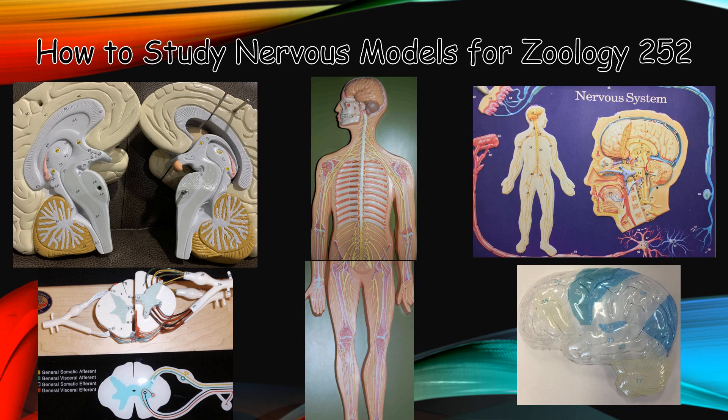The purpose of this video is to help you with the nervous models for the Zoology 252 class. Specifically, we will go over learning strategies on how you can learn these models. This video will include discussion regarding the brain, the spinal cord, the peripheral nerve guy with the green background, as well as the purple nervous model, including the CAP.